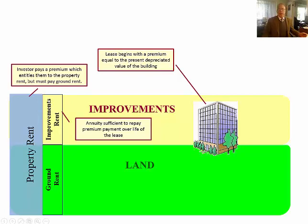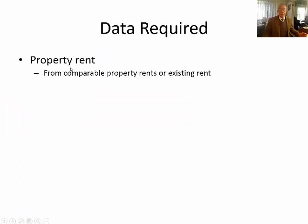We've done a self-correcting exercise in this area. Let's look at the data we need. The data required: first, we need the property rent. You can take that from comparable property rents or existing rent. The amount of detail you go to is up to you, as long as it's defensible. Some people may want to go to a fair bit of detail in getting comparable property rents, and that's fine and will be preferred. Others might simply take the existing rent or an estimate taken from discussions with a real estate agent — all of that works.